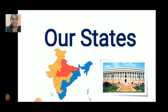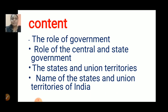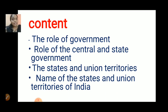Before that, we will see the names of our states and union territories. What we have studied in this chapter? We have studied the role of the government. India is a big country and it is difficult for the central government to look after the whole country. For this reason, our country has been divided into many states, and each state has one government. There are two types of government: central government and state government.